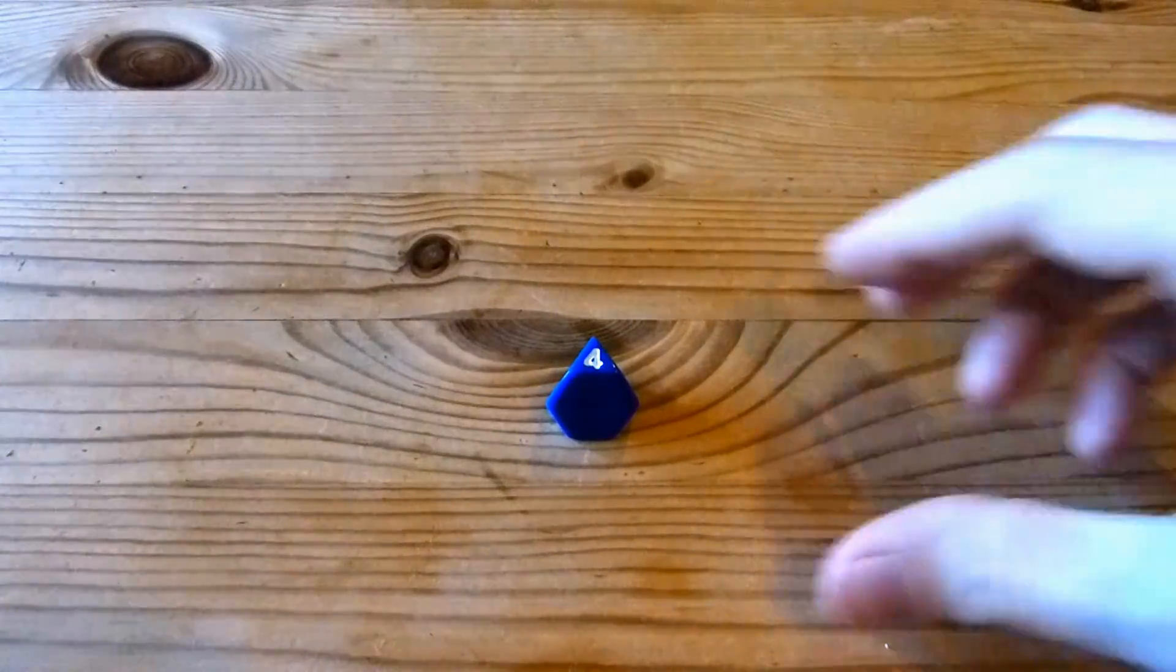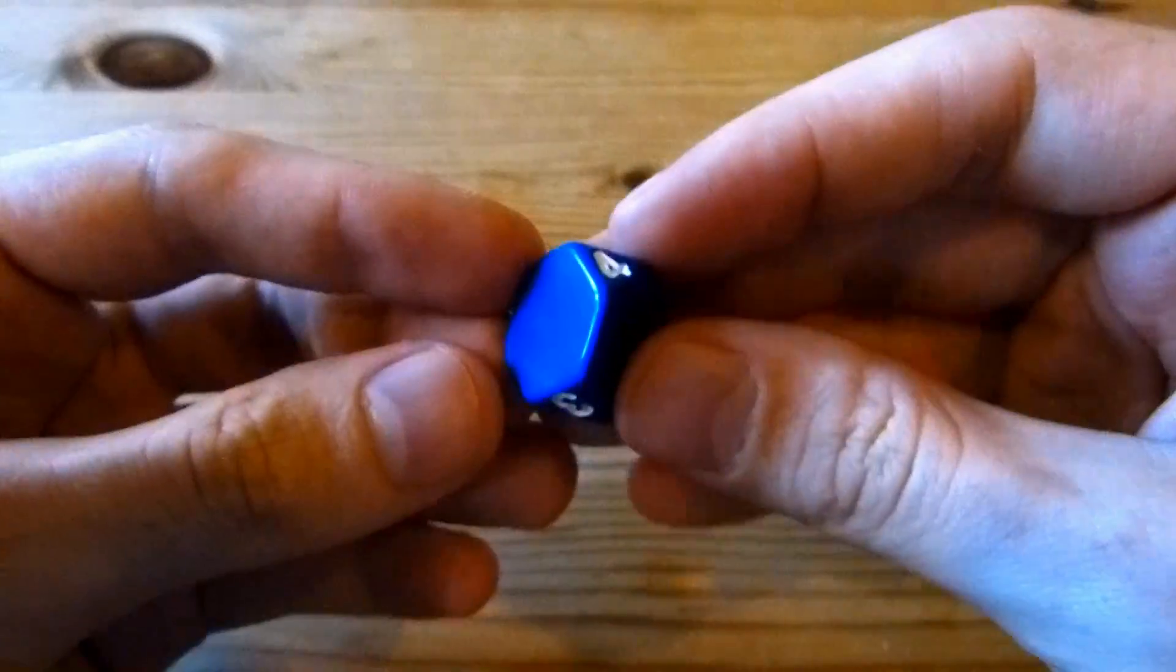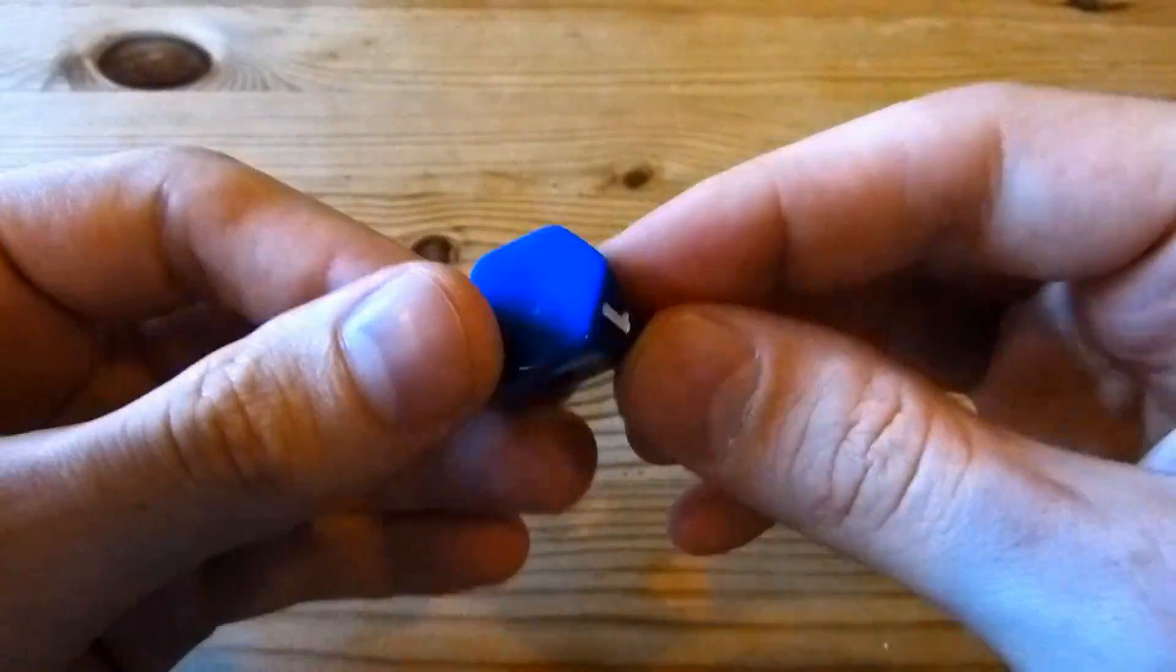Hi, my name is Henry Segermann. This is the D4 truncated tetrahedron by the Dice Lab. The Dice Lab is myself and Robert Fathauer.